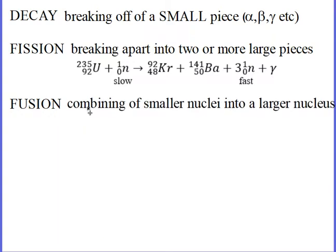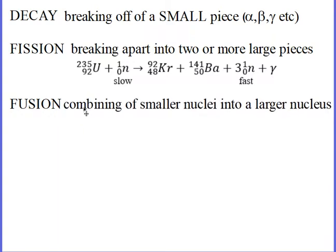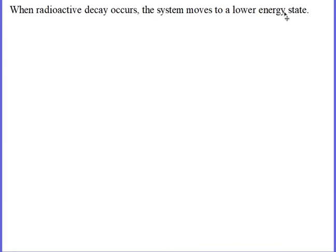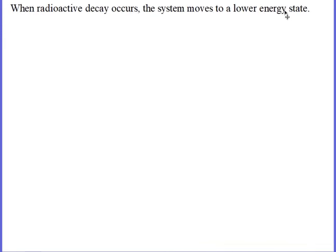Fission is the combining of smaller nuclei to make a larger nucleus. So when any process goes on — be it nuclear, chemical, or just falling down — it's always because the system is moving to a lower energy state. That is the direction in which things happen.